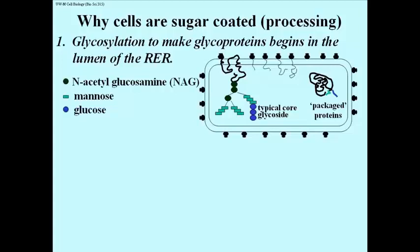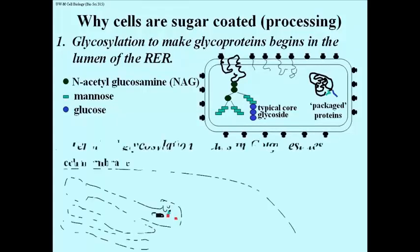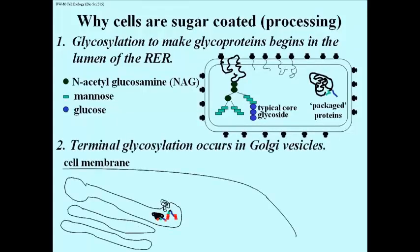On the left now are which sugars are involved: N-acetylglucosamine, sometimes called NAG for short, mannose, and of course glucose. Then other sugars will be added as these proteins progress through the Golgi vesicles and reach eventually their final destination. The additional sugars that are put onto the core glycoside are referred to as terminal glycosides or terminal sugars.